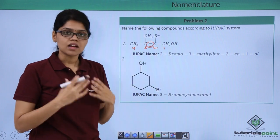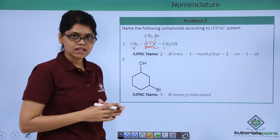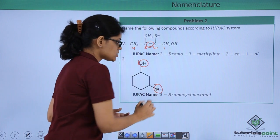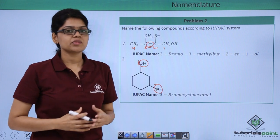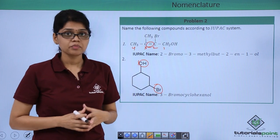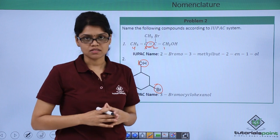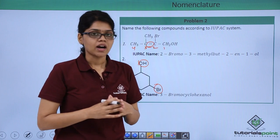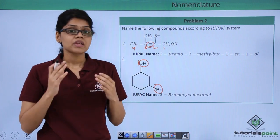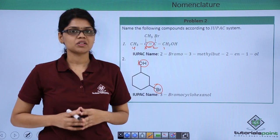For the last structure, we have a cyclohexyl group with OH and Br attached at specific positions. Writing the IUPAC name is straightforward: it is simply 3-bromo-cyclohexanol. I hope you are very clear on how to write the IUPAC names of alcohols, phenols and ethers. Thank you.